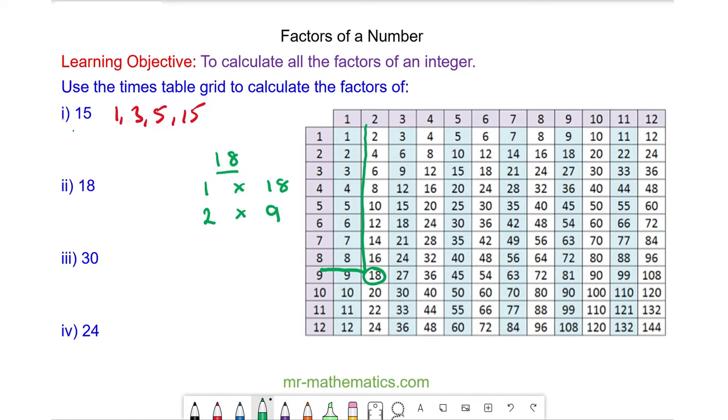So 9 is also a factor and because 9 is a factor 3 must also be a factor because 9 is a multiple of 3 and if we go down our 3 times tables we can see it is 3 times 6.